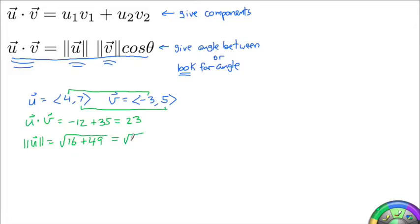Magnitude of u is equal to the square root of 4 squared plus 7 squared. So 16 plus 49, which would be 65. So this is the square root of 65. And then the magnitude of v, let's see, that would be the square root of 3 squared plus 5 squared, which would be 9 plus 25. So this is the square root of 34.